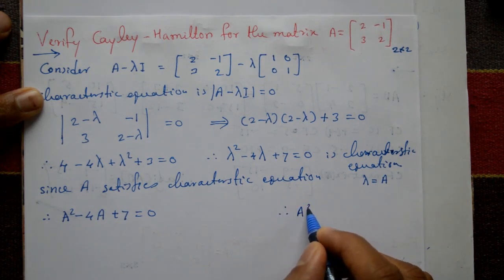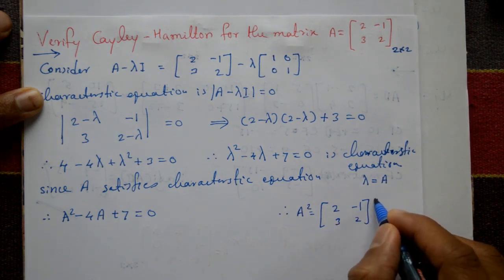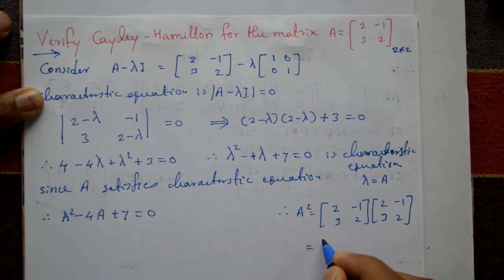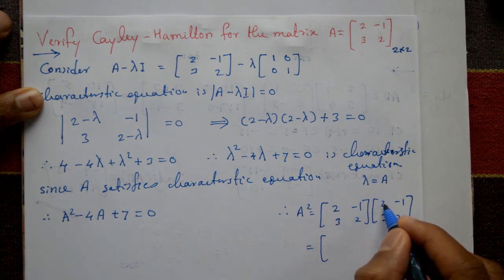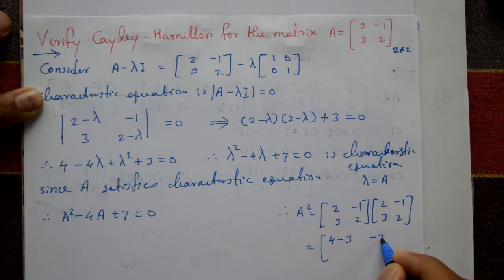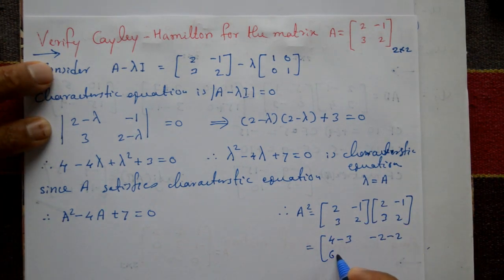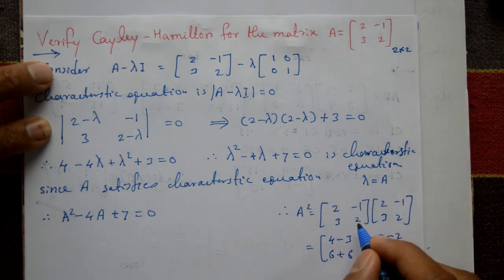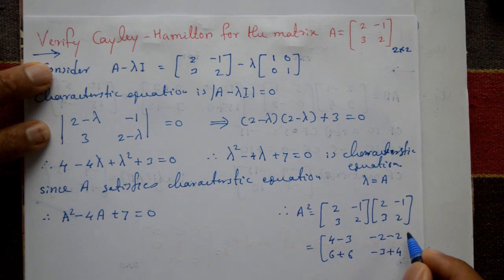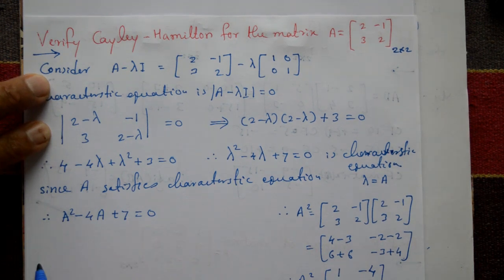Therefore A squared equals A times A = [[2,-1],[3,2]] times [[2,-1],[3,2]]. Row by column: first row first column: 2×2 + (−1)×3 = 4−3 = 1. First row second column: 2×(−1) + (−1)×2 = −4. Second row first column: 3×2 + 2×3 = 12. Second row second column: 3×(−1) + 2×2 = −3+4 = 1. So A squared = [[1, -4], [12, 1]].